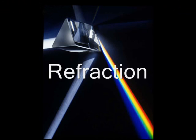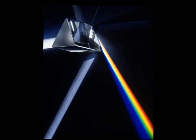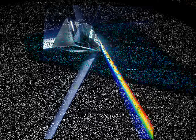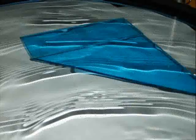The logo for Pink Floyd's Dark Side of the Moon depicts white light refracting through a prism. Each color has a different refraction angle, meaning the colors of the rainbow will appear.